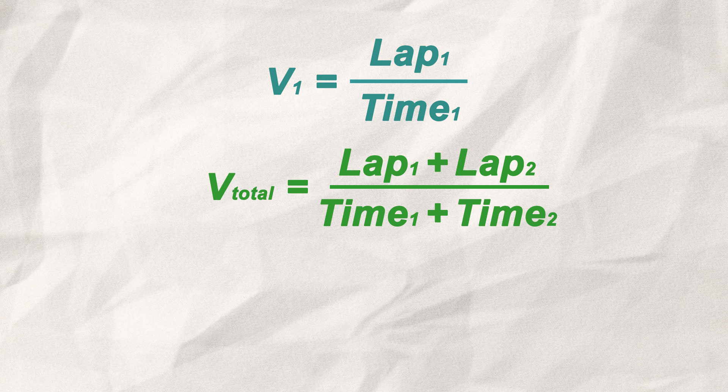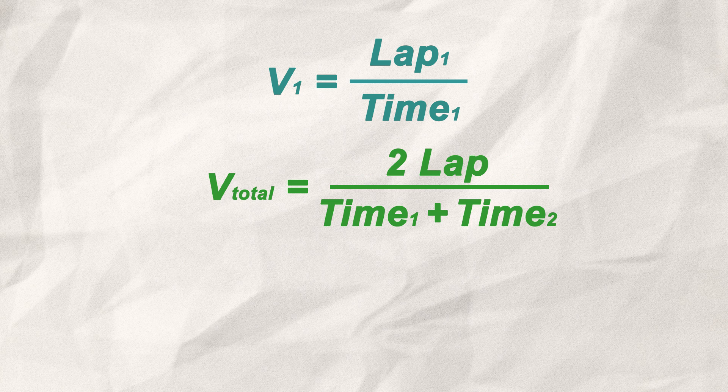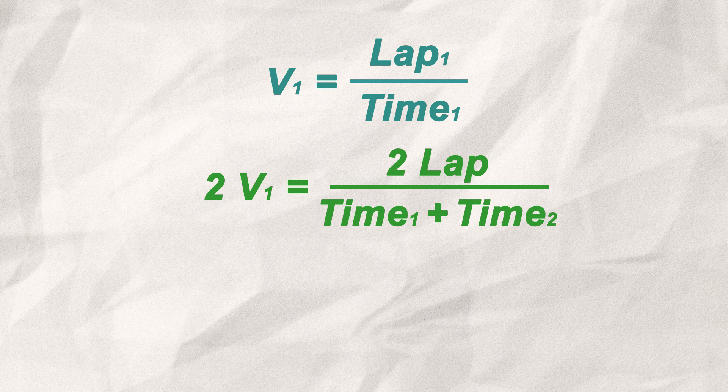To get the total average speed of both laps, I add the distance of both laps and divide it by my total time. Since the distance of both laps is the same, I can simply write it like this. And of course, the question stated that my V total should be equal to 2 times the average speed of the first round.